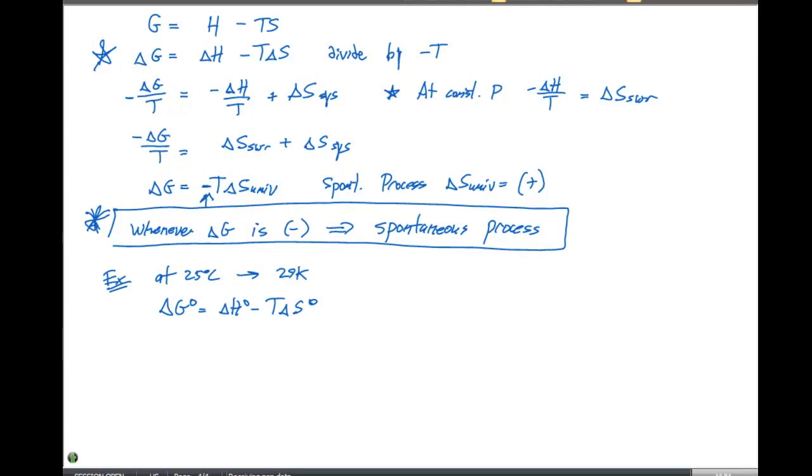All of our calculated values at the end of the textbook in the appendix are calculated under standard conditions. So here we can say that our delta G naught is gonna equal the delta H naught value, which we calculated to be 85.5 kilojoules minus T, which is 298 Kelvin times 0.2115 kilojoules per Kelvin.